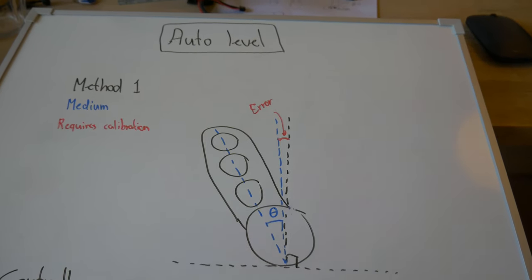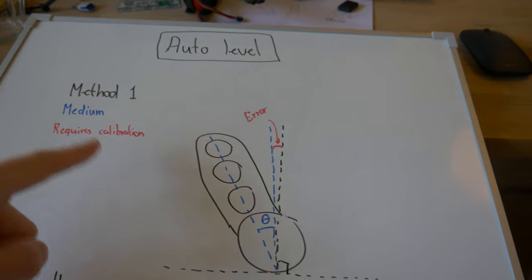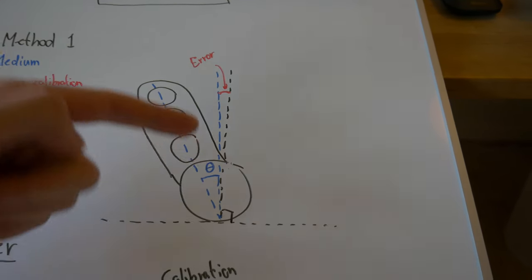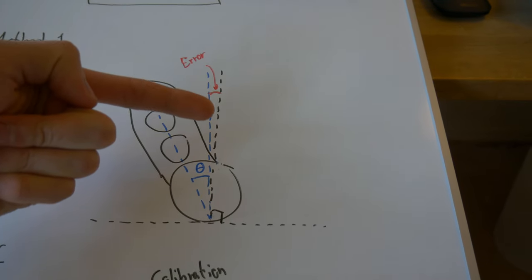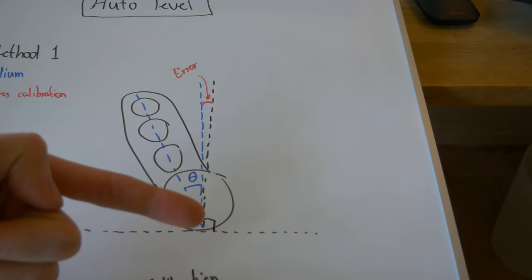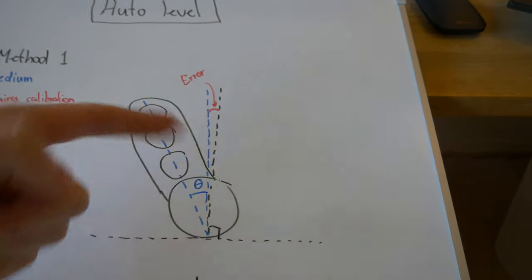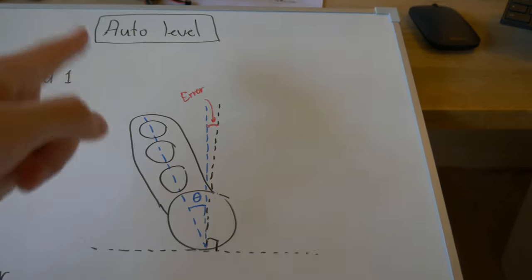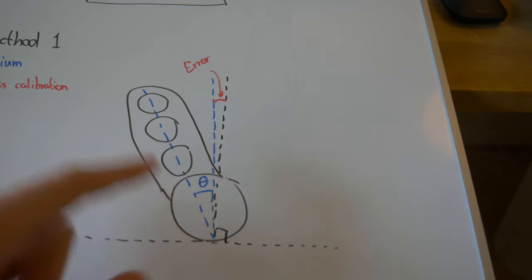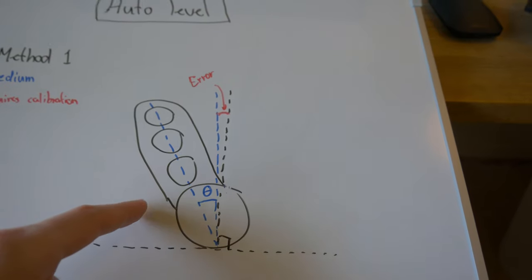Here I will explain method one of doing an auto level. Looking at this diagram, we have the black vertical line right here. This is supposed to represent the gravity vector from Earth. This is basically perfectly straight up and down.